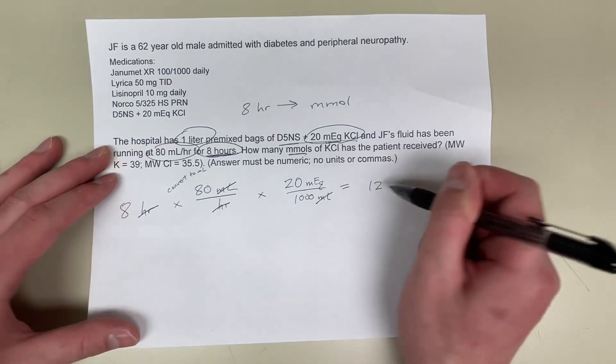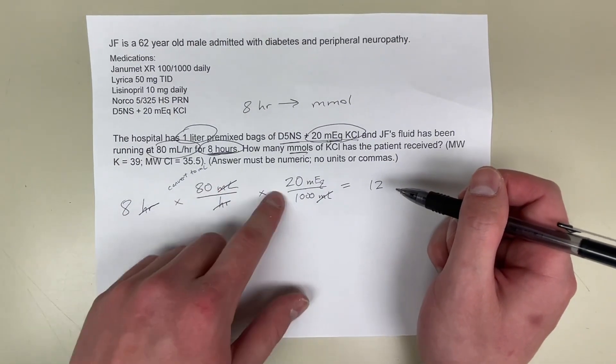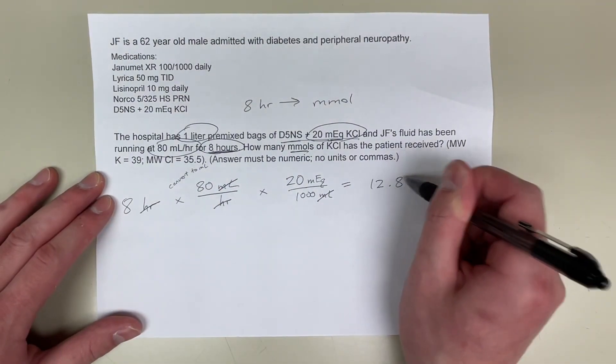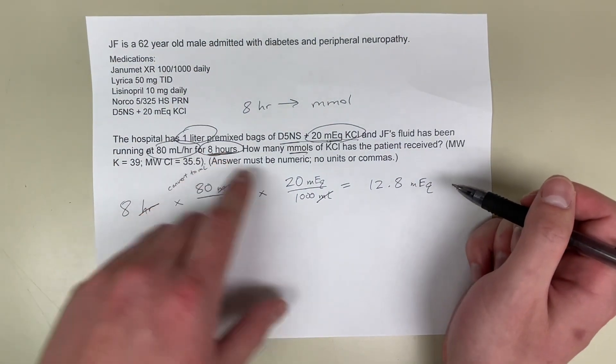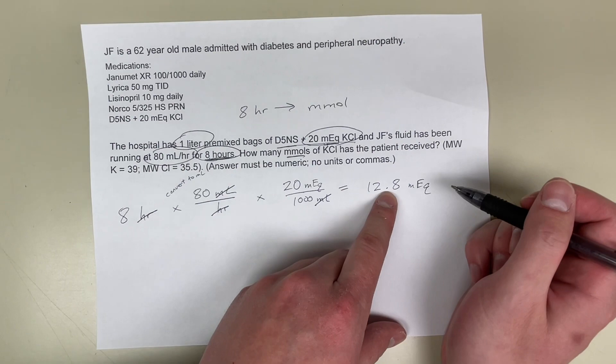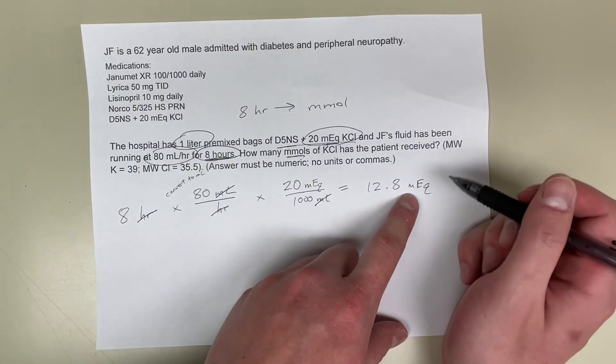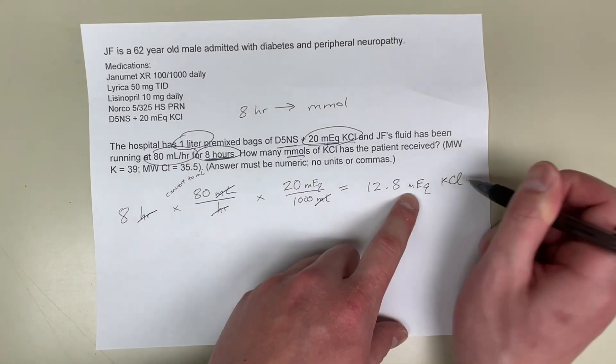So if I solve for this, 8 times 80 times 20 over 1,000 equals 12.8 milliequivalents. So over this 8 hours, 12.8 milliequivalents of potassium chloride has been infused into the patient.